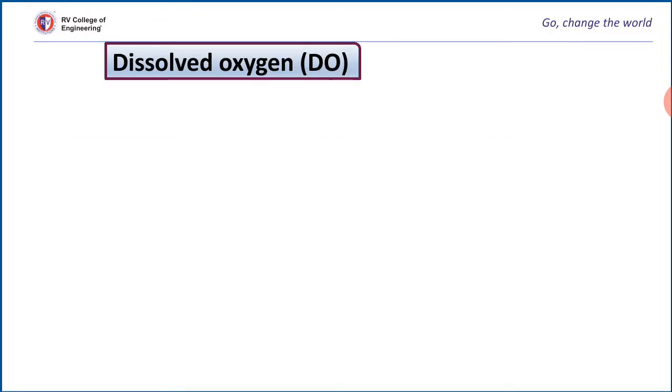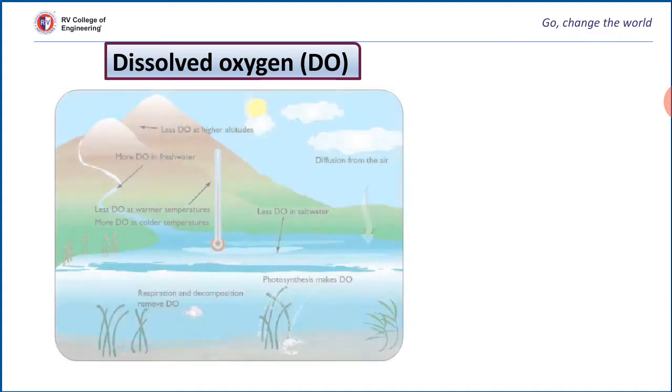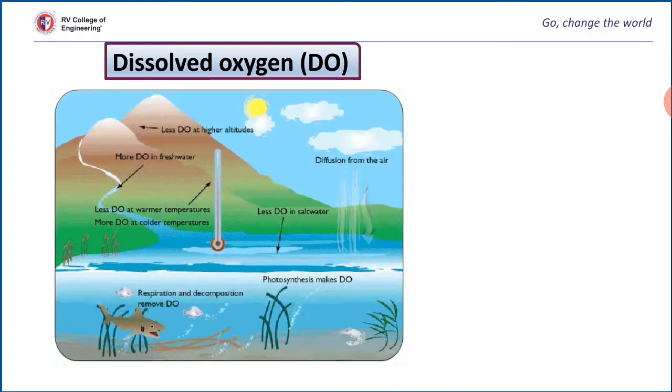Oxygen soluble in water is called dissolved oxygen. This dissolved oxygen is required for all the aquatic organisms to maintain their biological process.